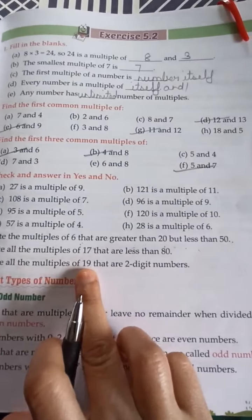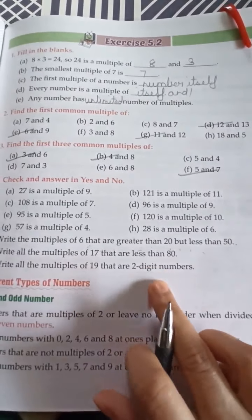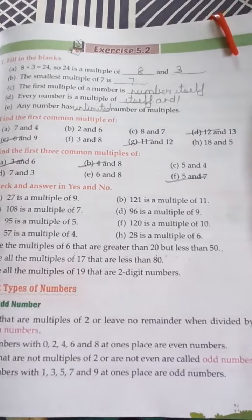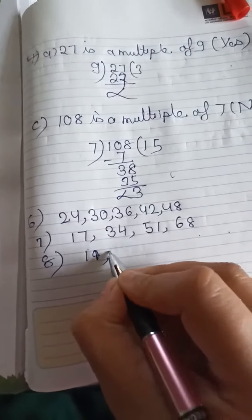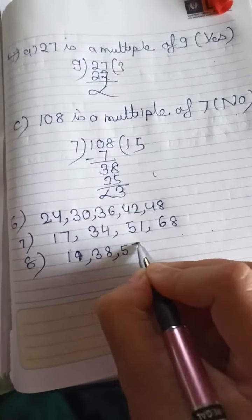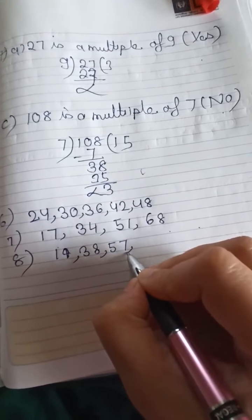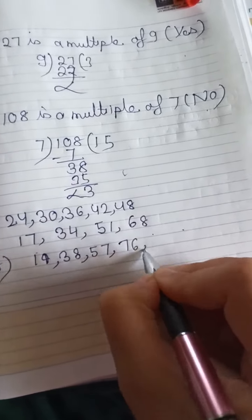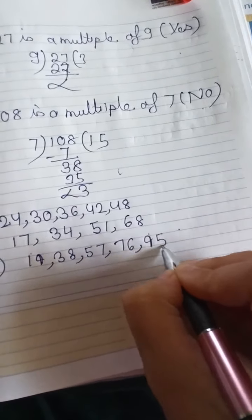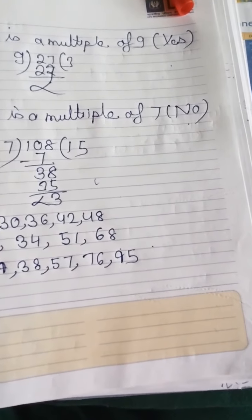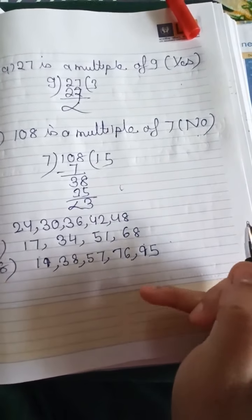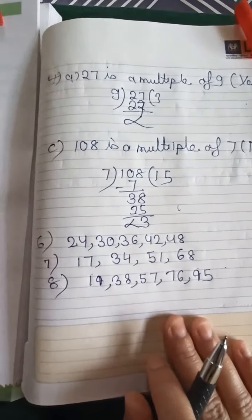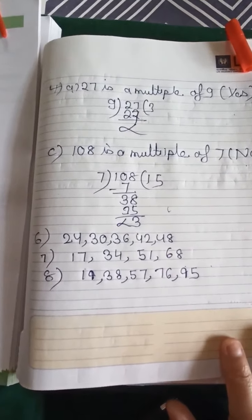Now come to question number 8: write all the multiples of 19 that are 2-digit numbers. So write 19×1 is 19, 19×2 is 38, 19×3 is 57, 19×4 is 76, 19×5 is 95. If you take 19×6, it will be more than 100 — it will be a 3-digit number. That's why we will not take it. So this is the way through which you have to solve this question.